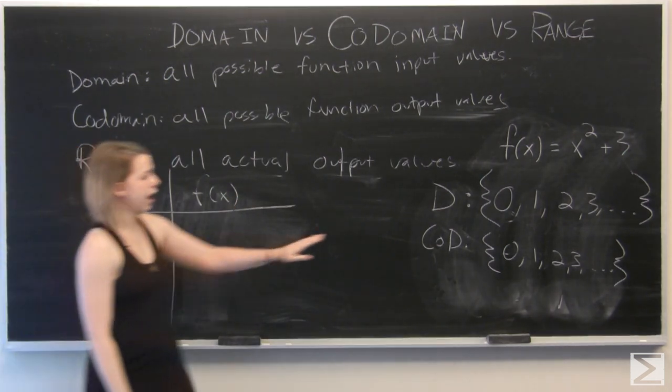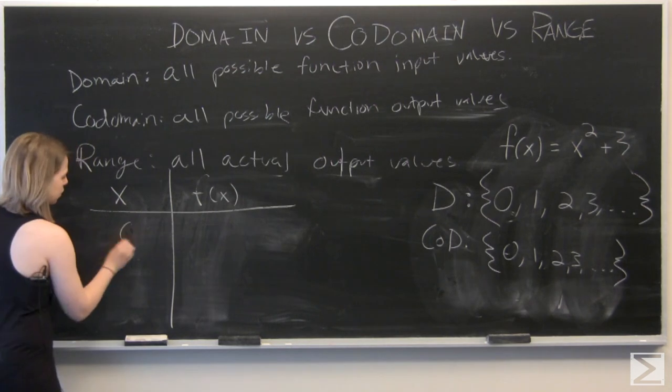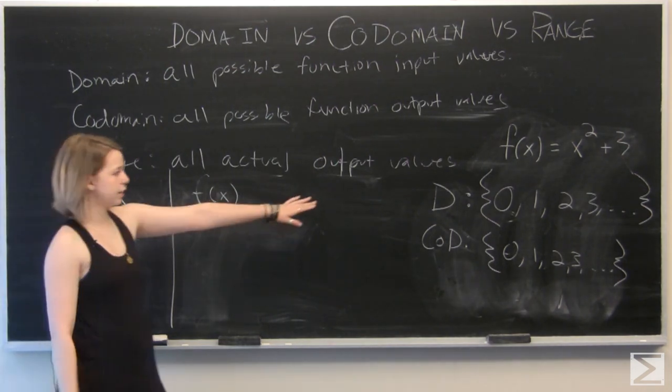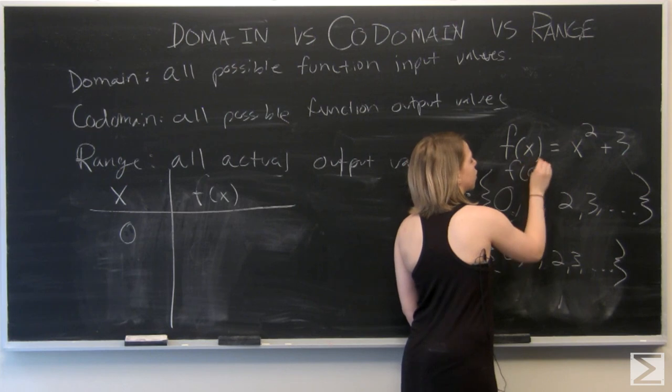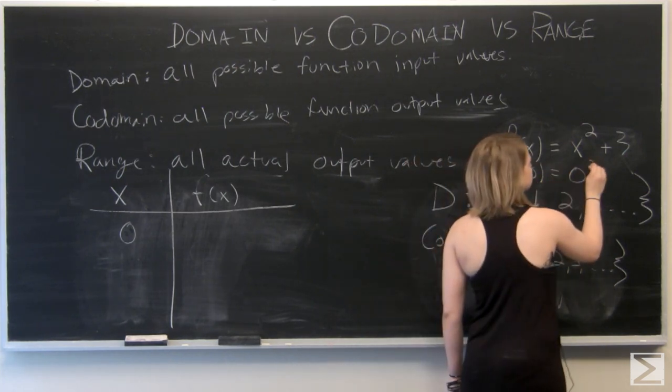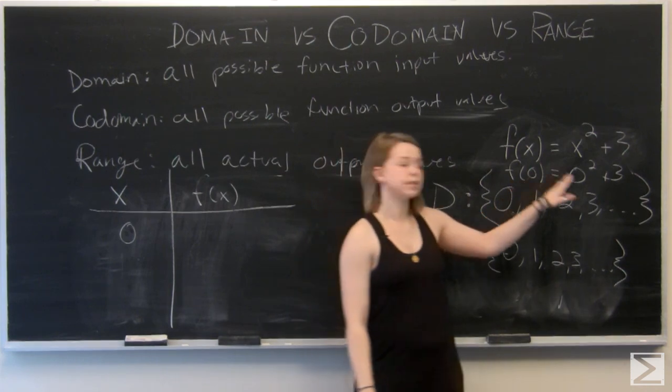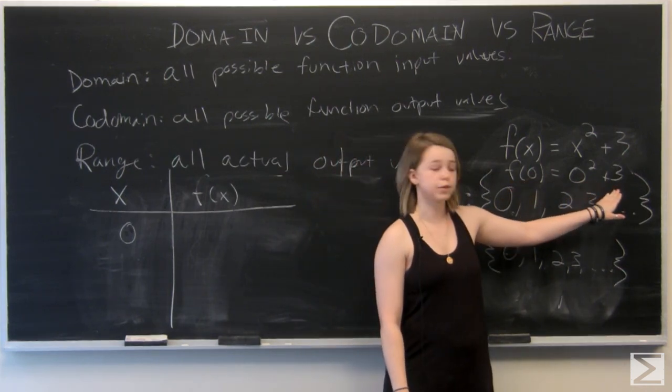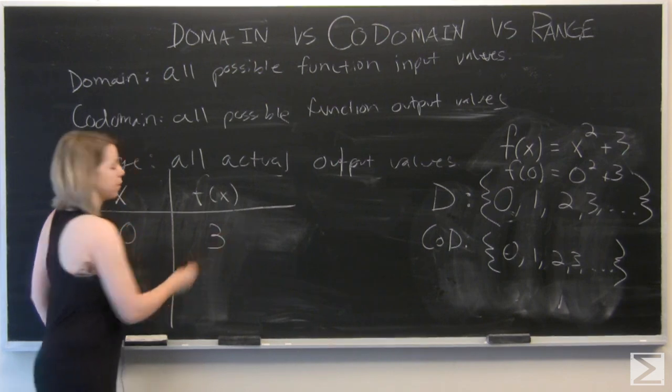So let's input our first whole number, 0. And so if we've placed 0 in for all of the x values, f of 0 is equal to 0 squared plus 3. Then our output is positive 3.